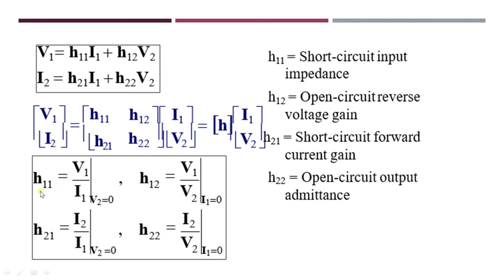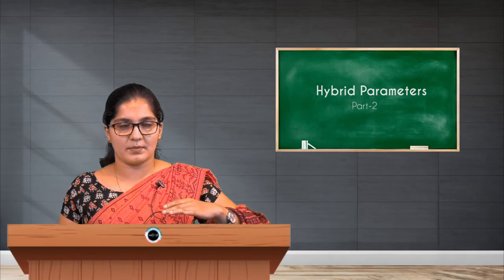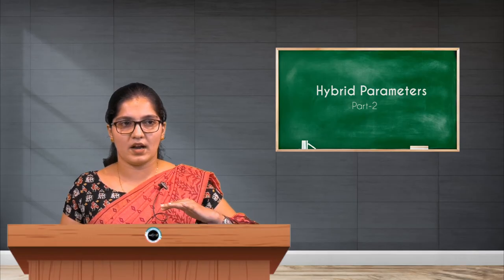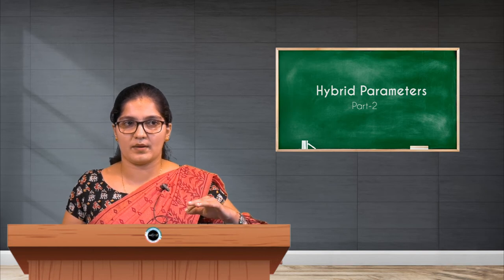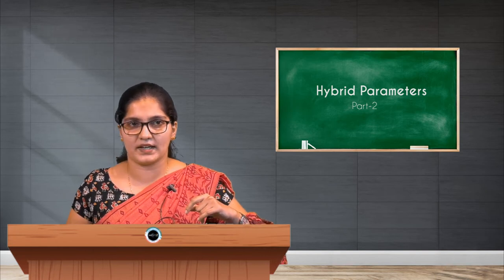The expression for H11 becomes: H11 is nothing but V1 divided by I1, which is the input impedance when the output is short circuited. Now let us see step by step how these four parameters are obtained.